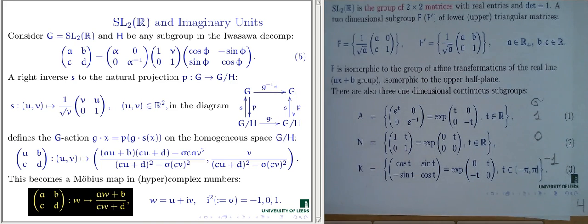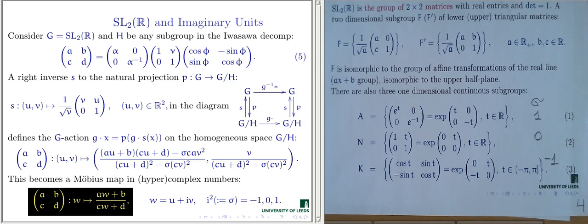Of course, we need to discuss what meaning to assign to this fraction if we are dividing by zero — or even worse, as we will discuss, the numbers involved have so-called divisors of zero. Unlike the complex numbers, these hyper-complex numbers do not form a field; they form a commutative, associative, two-dimensional algebra with divisors of zero.